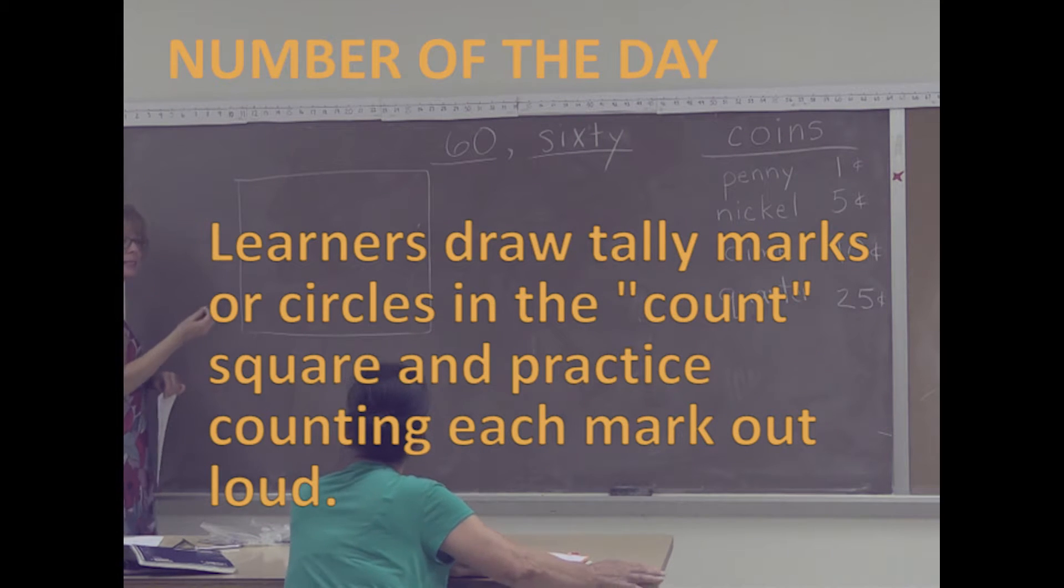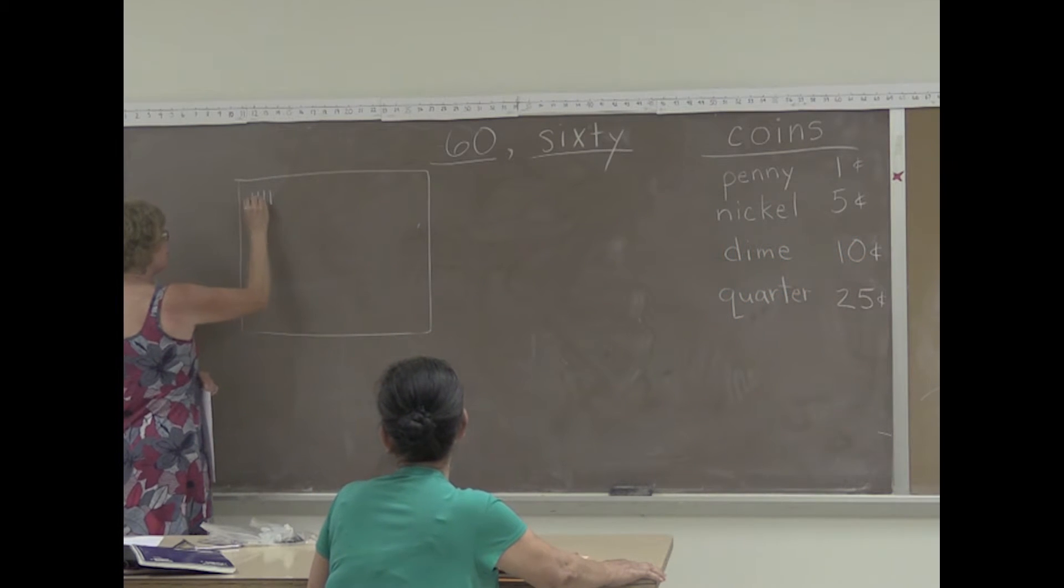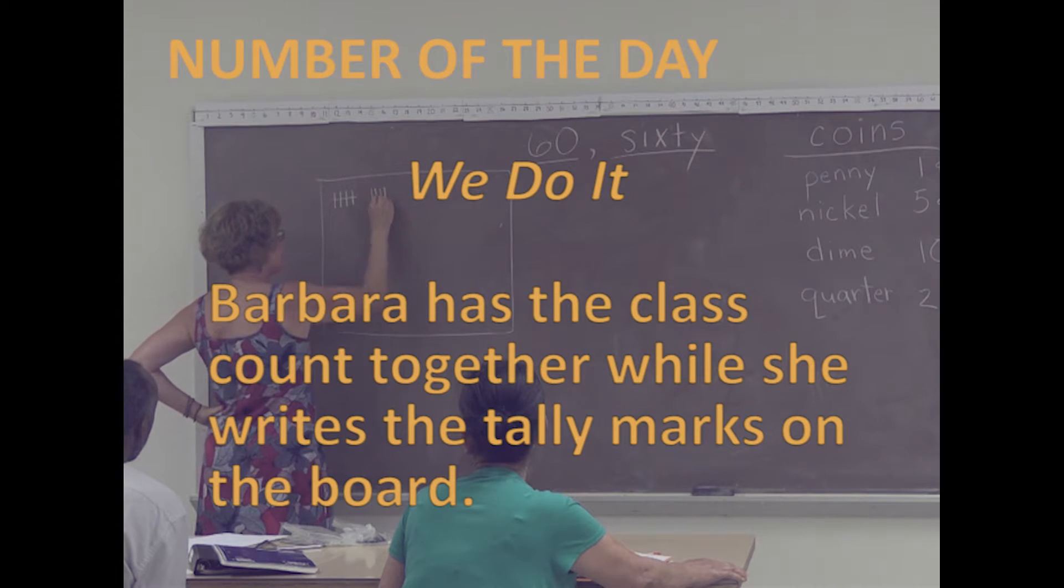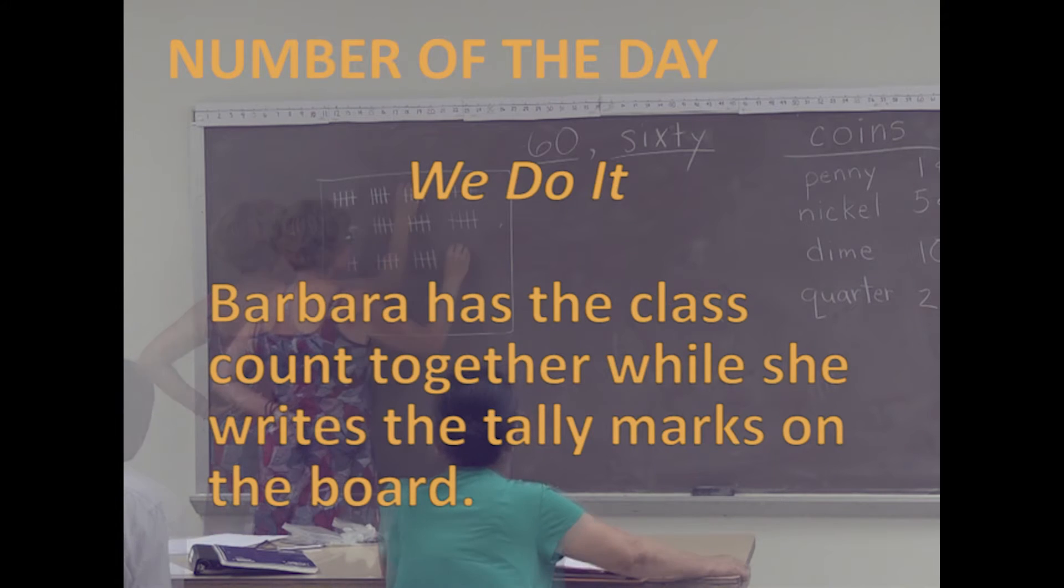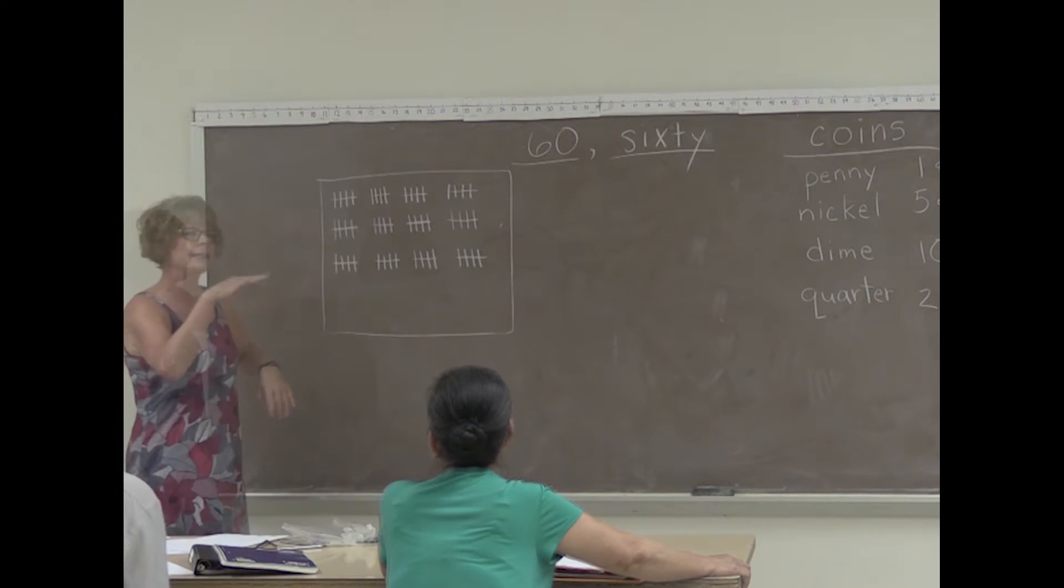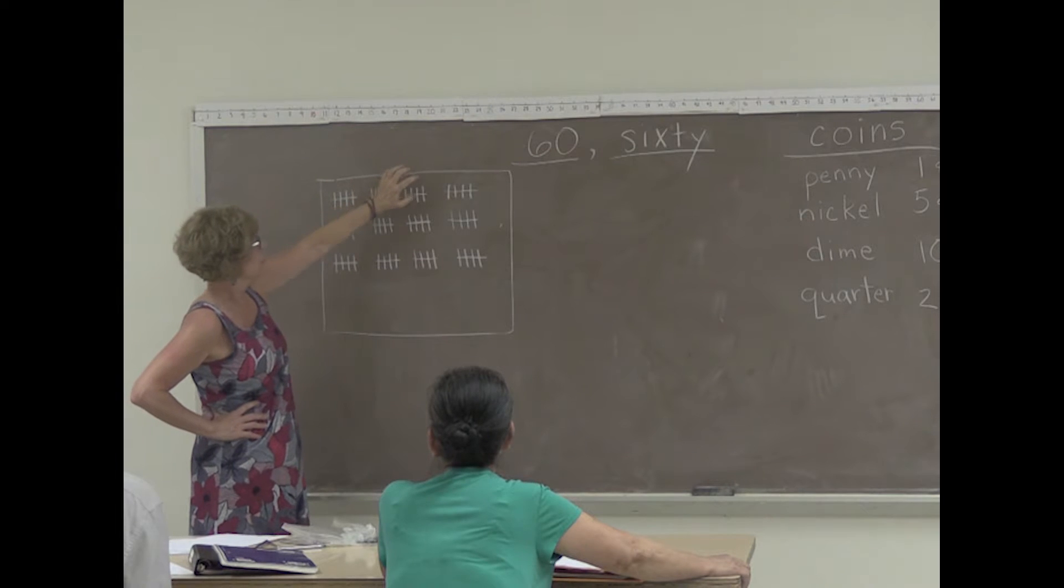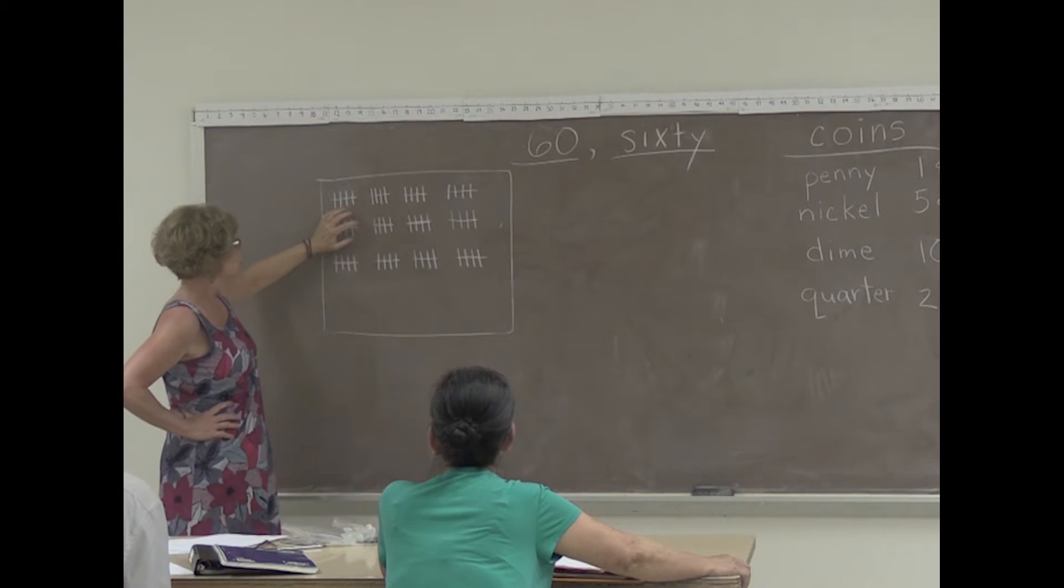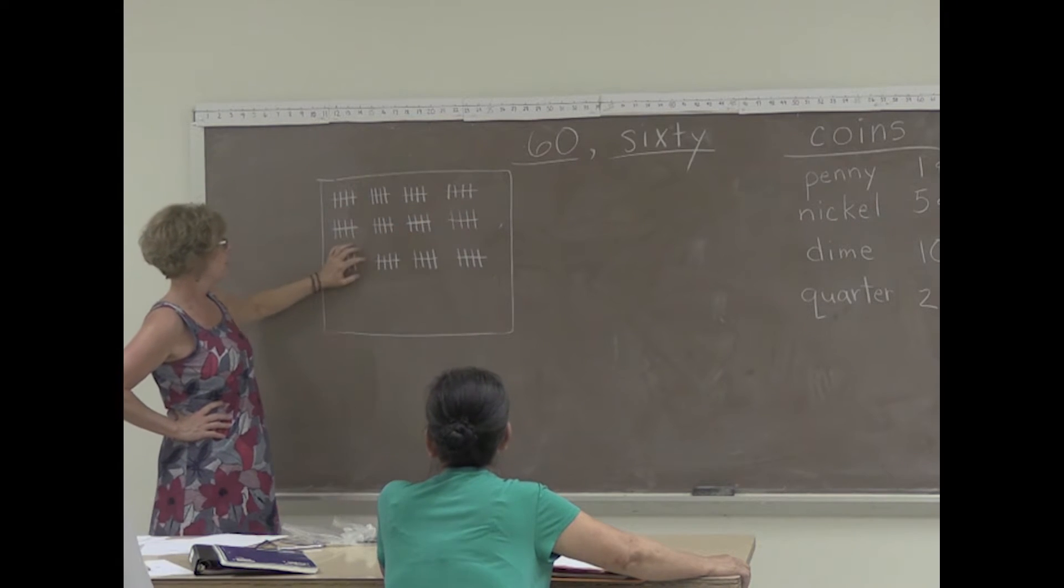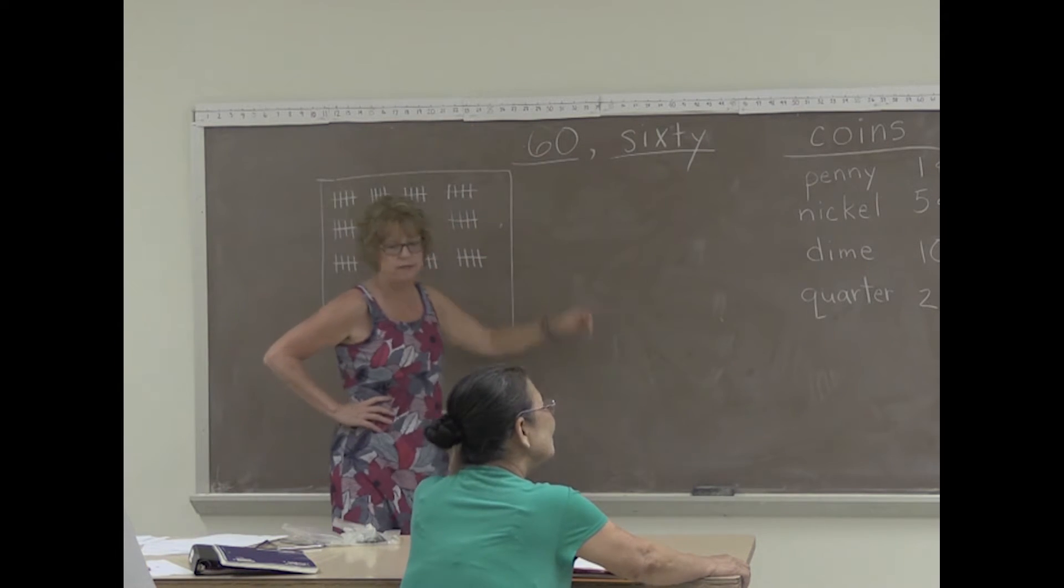Let's count our tallies up to 60. Ready? 1, 2, 3, 4, 5. Alright, so we have 5. Let's count. 6, 7, 8, 9, 10, 56, 57, 58, 59, 60. And 60 is our number of the day.